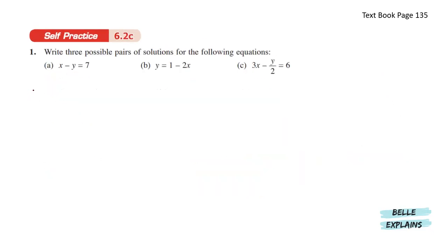Next, self-practice 6.2c. Write three possible pairs of solutions for the following equations. x minus y equals 7. So let's try out the possibilities here. If y equals 0, x minus 0 equals 7 which means x equals 7.